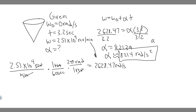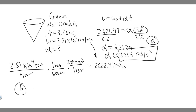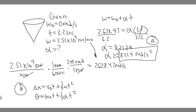Now let's do Part B: determine the angle in radians through which the drill rotates. Just like in kinematics you solve for distance, here you solve for how much something turns — the angle. The normal kinematic equation delta-X = V-sub-zero times T plus one-half A times T-squared becomes theta = omega-zero times T plus one-half alpha times T-squared, just replacing variables with rotational kinematic equivalents.